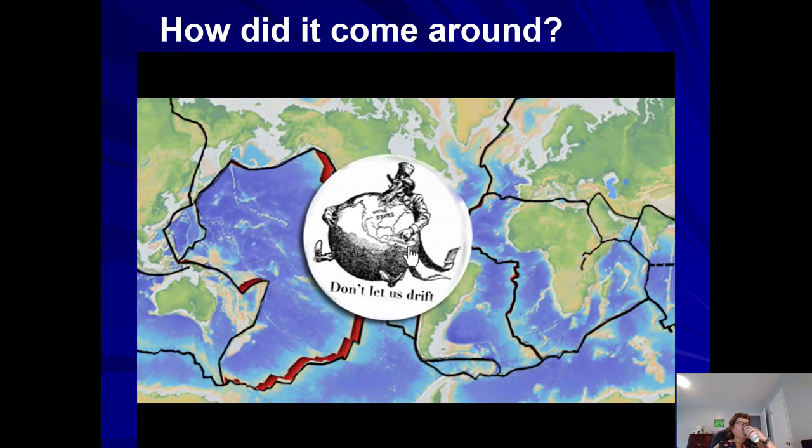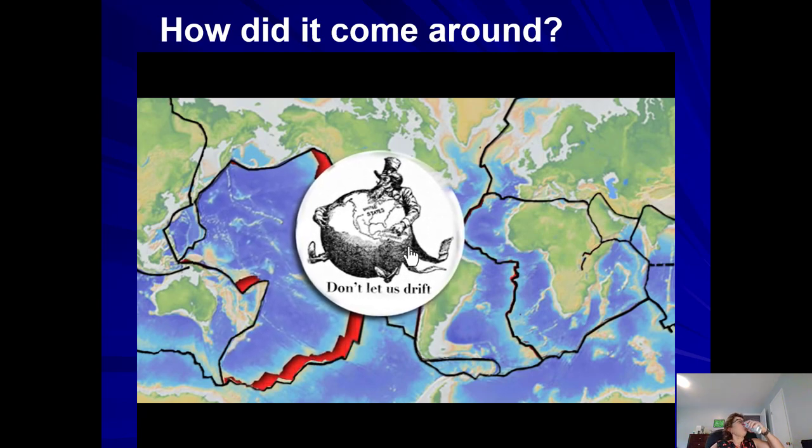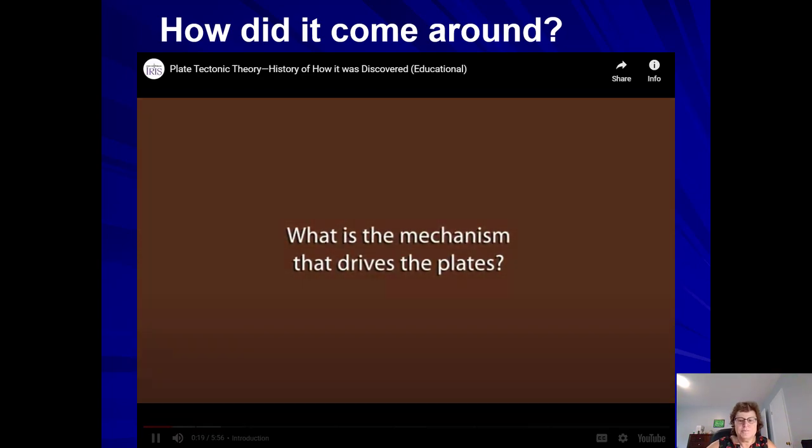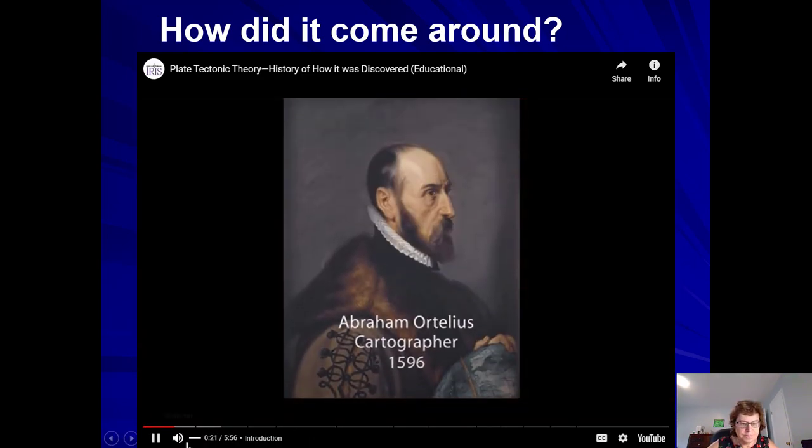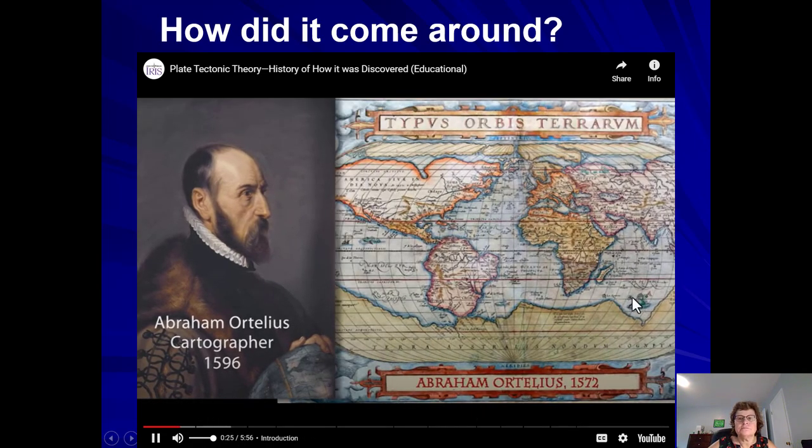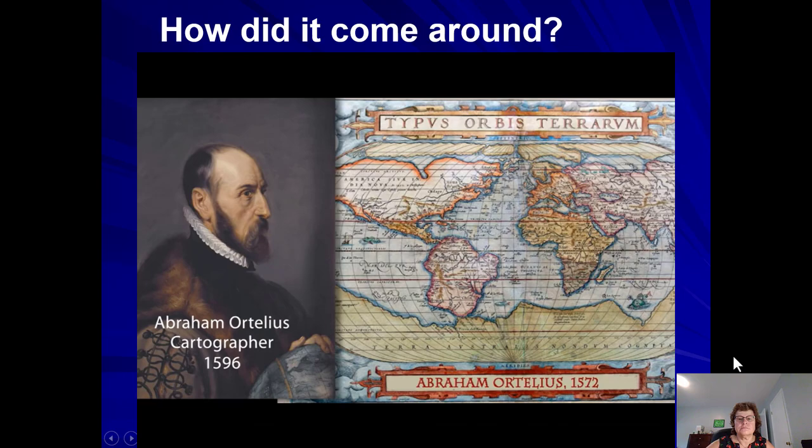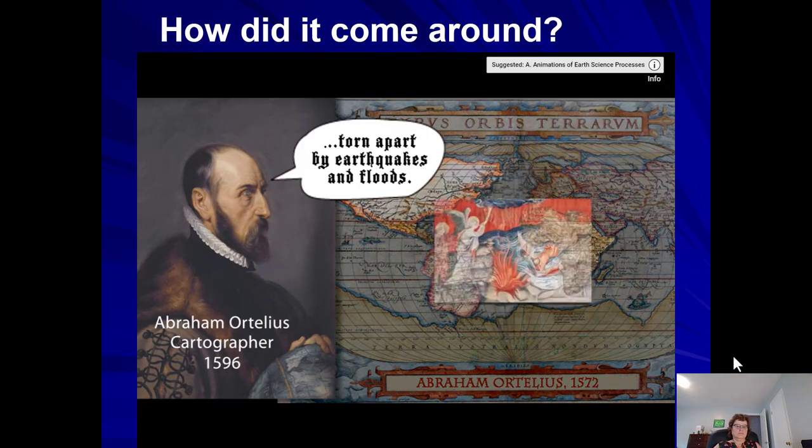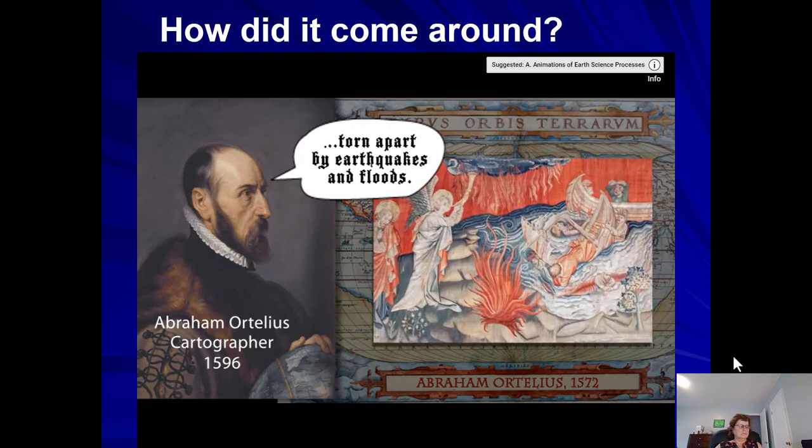Plate tectonic theory was not accepted for centuries because no one could adequately answer the question, what is the mechanism that drives the plates? In the late 16th century, Abraham Ortelius, in compiling New World Explorer maps, noted that by carefully considering the coastlines of the Atlantic Ocean, it appeared that the Americas had been torn away from Europe and Africa by, he theorized, earthquakes and floods.